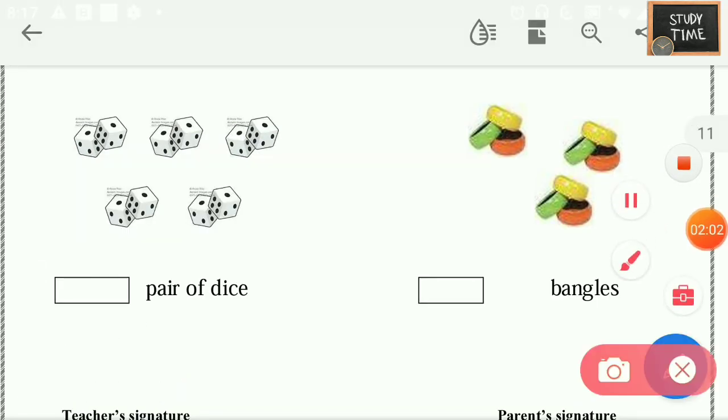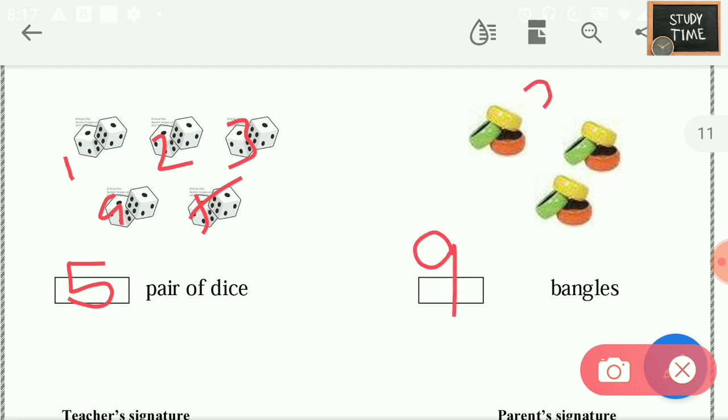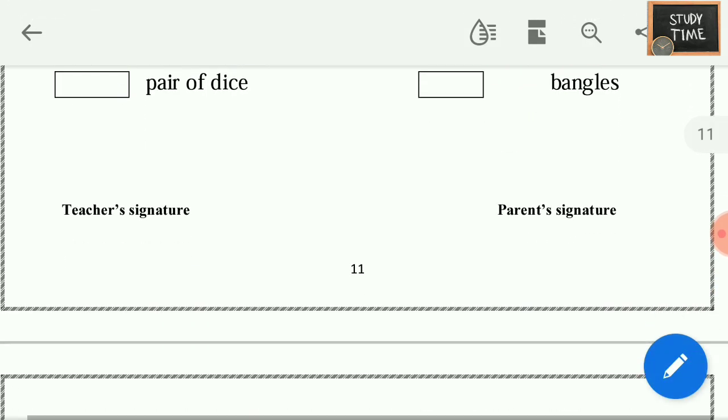Next, pairs of dice: 1, 2, 3, 4, 5. So 5 pairs of dice. And 9 bangles: 3 plus 3 plus 3.